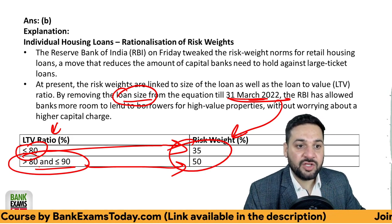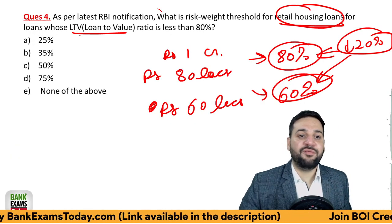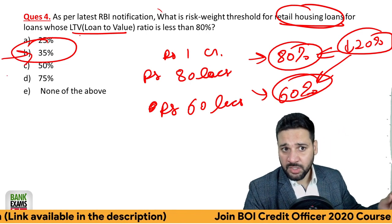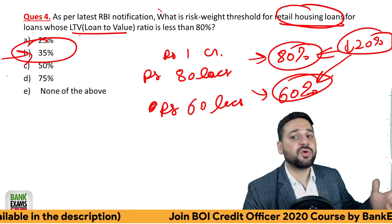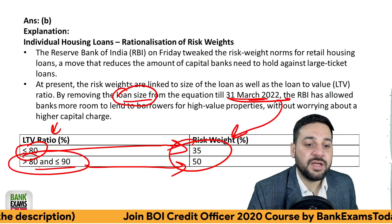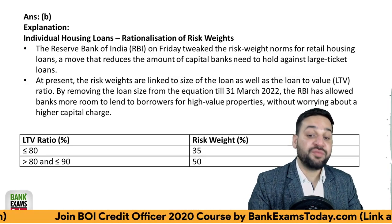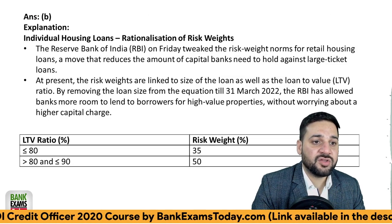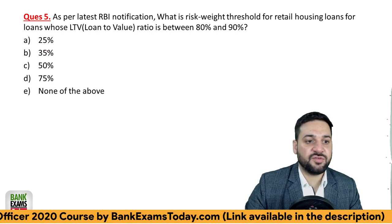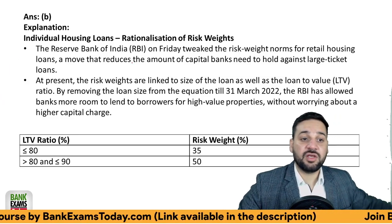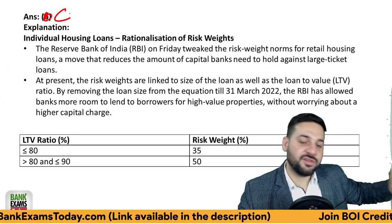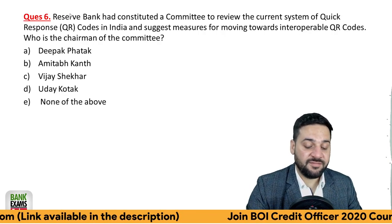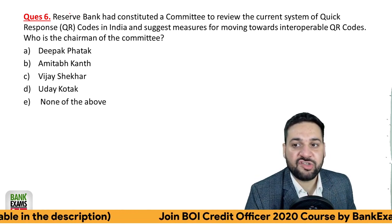So to summarize: if the LTV ratio is less than 80 percent, the risk weight threshold for retail housing loans is 35 percent. If the LTV is between 80 and 90 percent, it is 50 percent. The answer to question five is C — 50 percent. Please remember these figures.